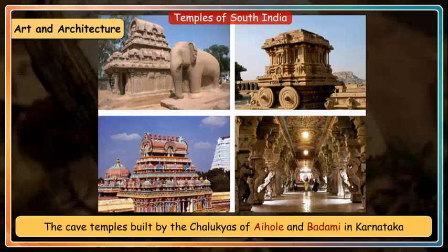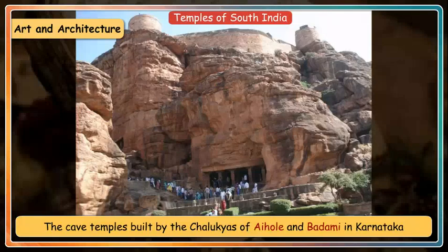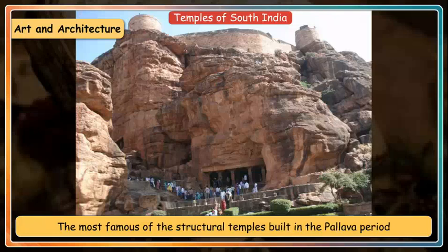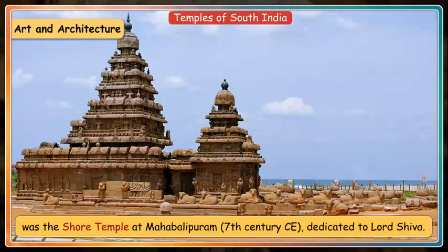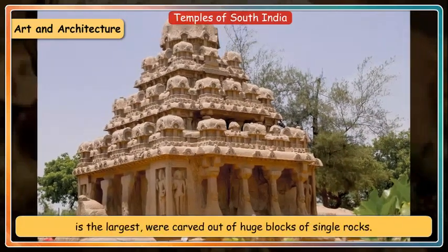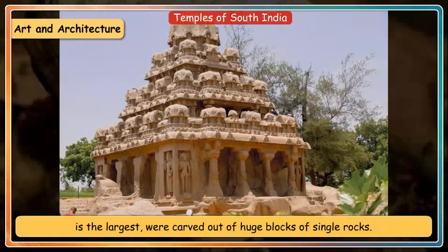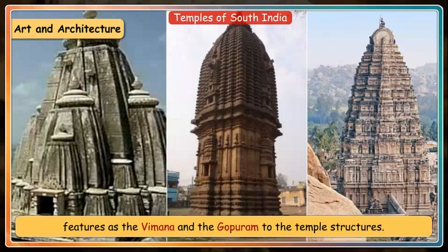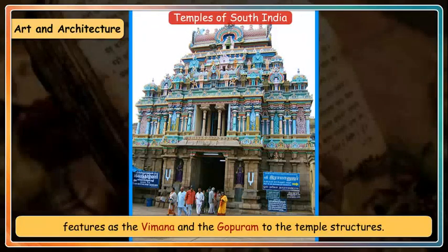The cave temples built by the Chalukyas of Aihole and Badami in Karnataka are representative of classical South Indian temple architecture. The most famous structural temple of the Pallava period was the Shore Temple at Mahabalipuram, dedicated to Lord Shiva. The Rathas of Mahabalipuram, of which the Dharmaraja Ratha is the largest, were carved out of huge blocks of single rocks. The Cholas further refined temple architecture, adding distinctive features such as the Vimana and Gopuram to temple structures.